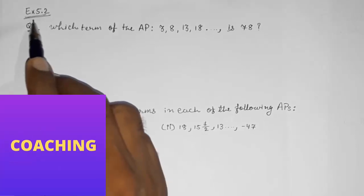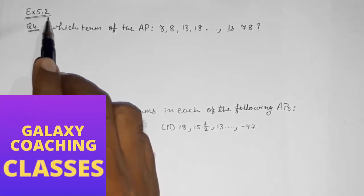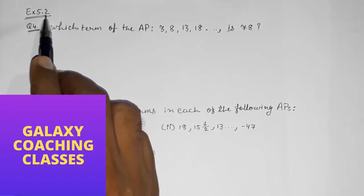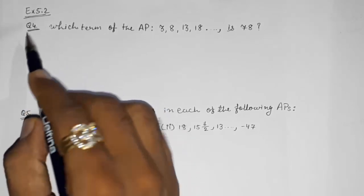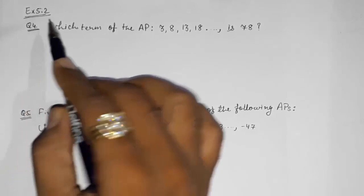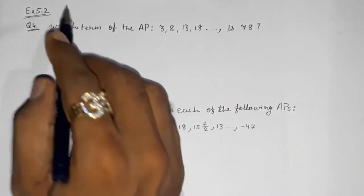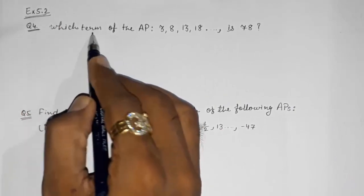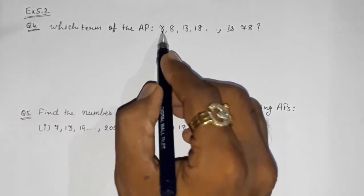Hello friends, today we are going to solve CBSE Class 10th Maths Exercise 5.2, question numbers 4, 5, 6, and 7. Four questions we are going to solve. Look here — question number 4: which term of the AP 3, 8, 13, 18... is 78?